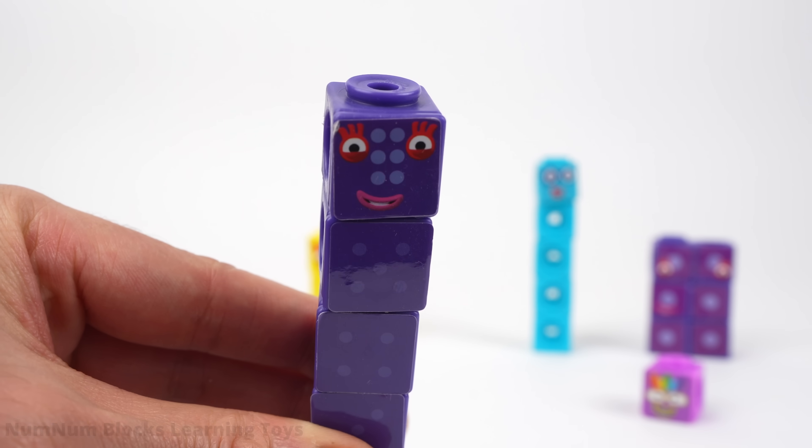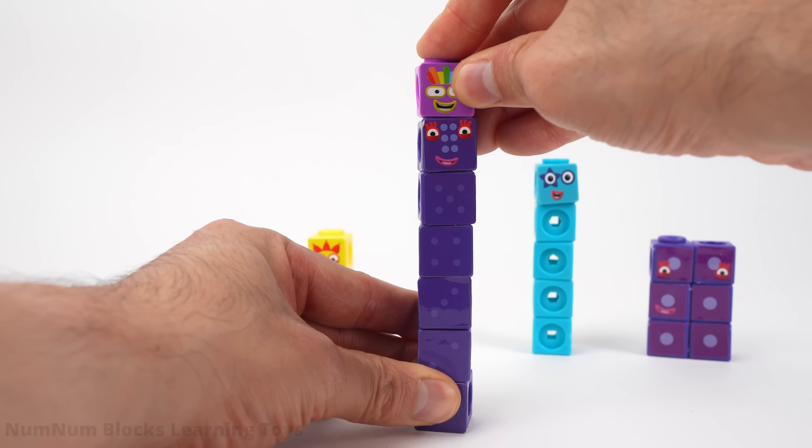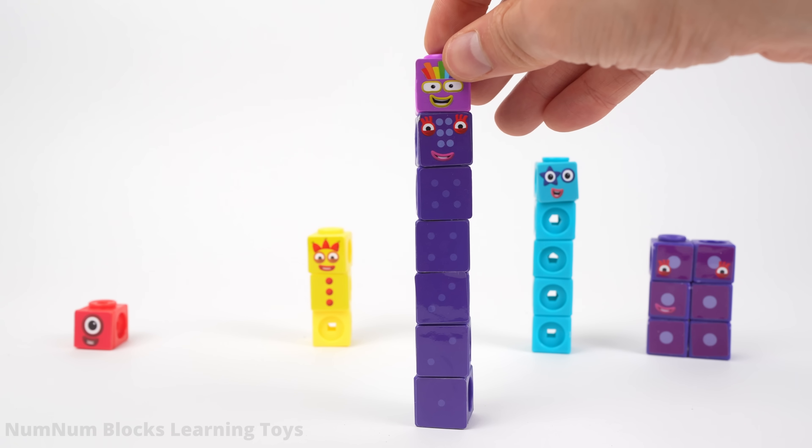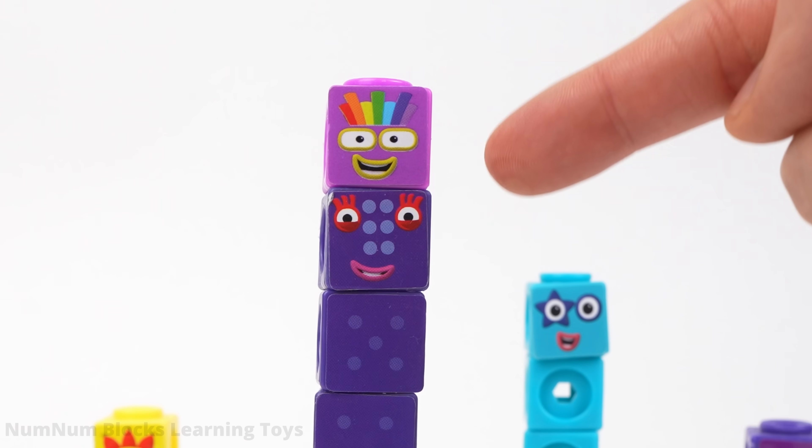Now we have the right number of blocks for seven's body. Let's count the blocks from the bottom to the top. One, two, three, four, five, six, seven.